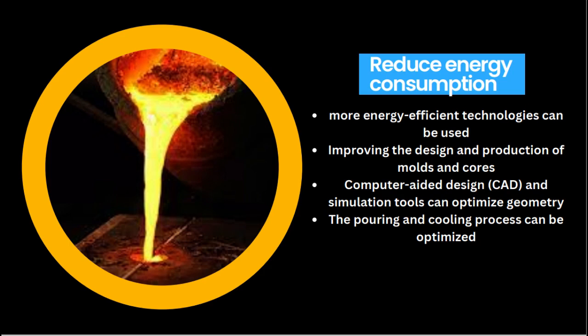The pouring and cooling process can be optimized to increase effectiveness. Coating molds with ceramic or insulating materials can shorten the cooling time required. By optimizing the pouring process to reduce metal turbulence and increase the fill rate, energy waste can be minimized. Overall, implementing these energy-saving measures in sand casting can enhance energy efficiency, improve casting quality, promote competitiveness in the industry, and reduce environmental pollution.